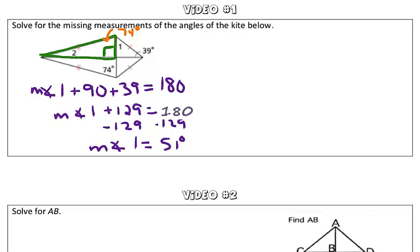So to solve for measurement of angle 2, we do a similar process as we did for angle 1. We've got a triangle, and we know two of the angles, but we're looking for the third. So the measure of angle 2 plus 90 degrees plus 74 degrees is equal to the sum of the interior angles of a triangle, which is 180.